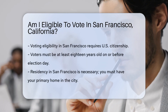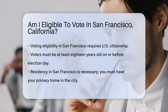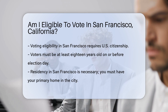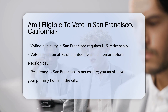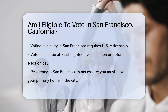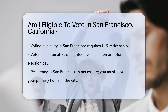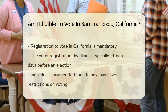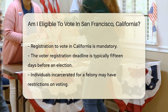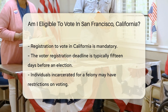Voting eligibility in San Francisco is determined by several key criteria. First, you must be a citizen of the United States — this is a fundamental requirement for all voters. Next, you need to be at least 18 years old on or before Election Day. This age requirement is standard across the United States. Additionally, you must be a resident of San Francisco, meaning you should have established your primary home in the city.